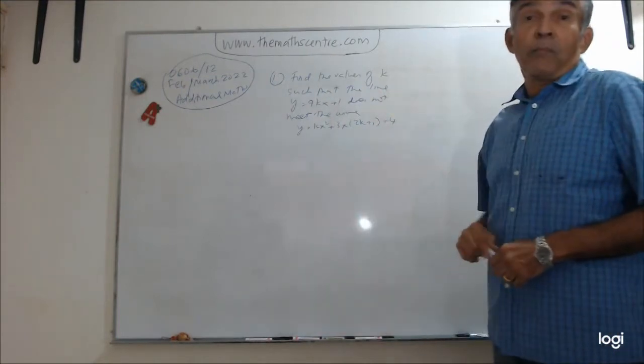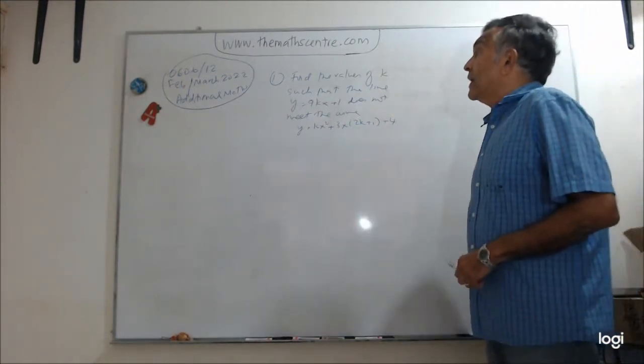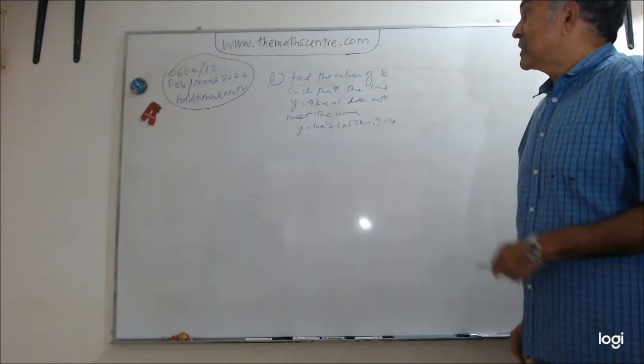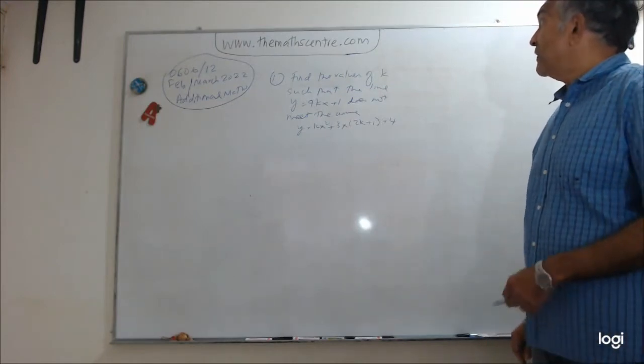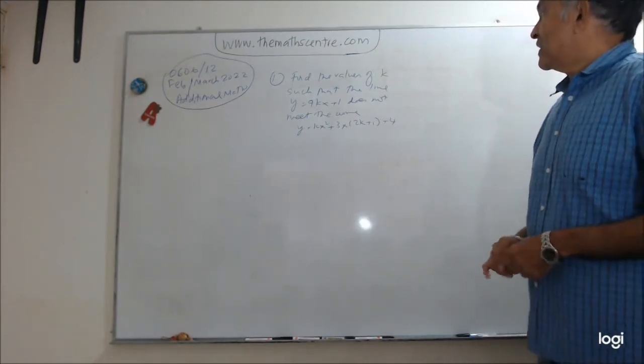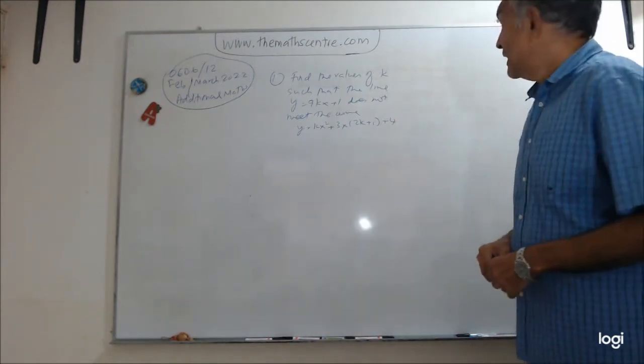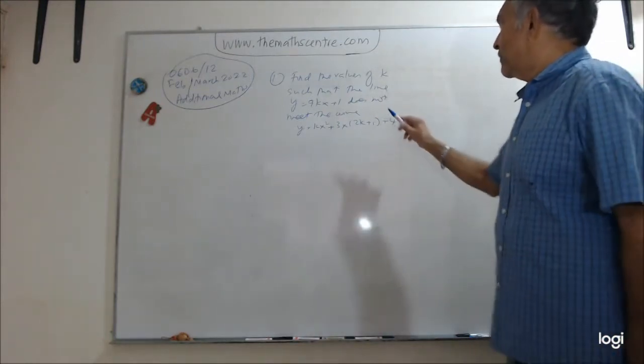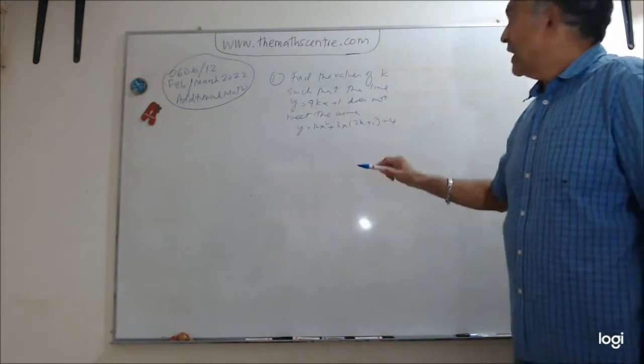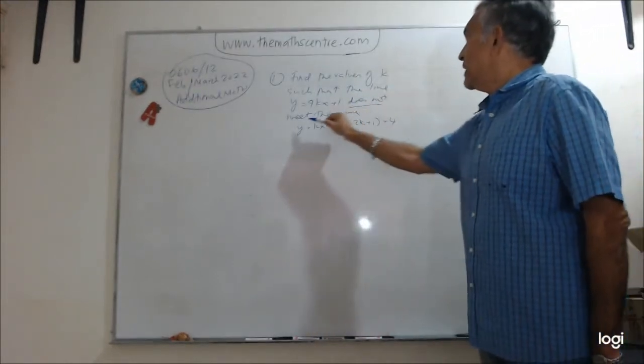So please visit TheMathCenter.com. This question, question number one on this paper, find the values of k such that the line y equals 9kx plus 1 does not meet the curve. So the keywords here, does not meet the curve.